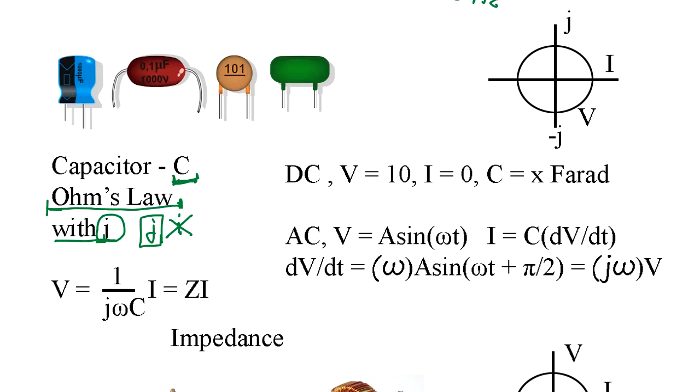The capacitor in DC doesn't make much sense because you apply the voltage, no current flow. Well, transient current flow and after that it's become zero. And capacity, capacitance is the farad, micro farad kind of measure. But AC capacitor makes sense.